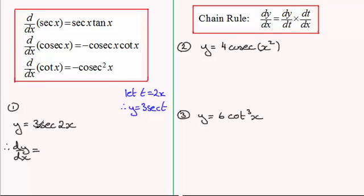So we've got a 3 here so it's going to be 3 sec t tan t. But instead of writing t I'm going to replace it with that 2x. So we get 3 sec 2x and then it would be tan of 2x. And I'll put that in brackets like so. So that's dy by dt.